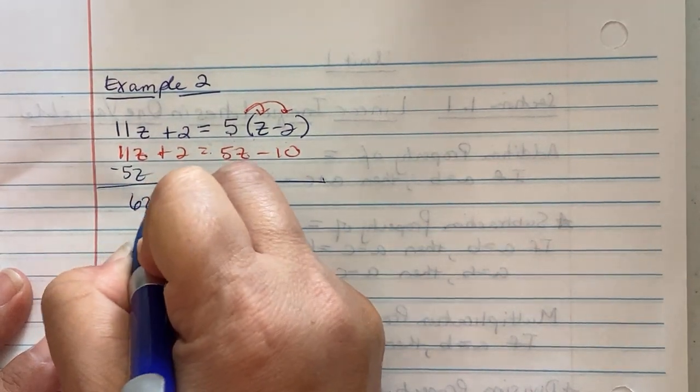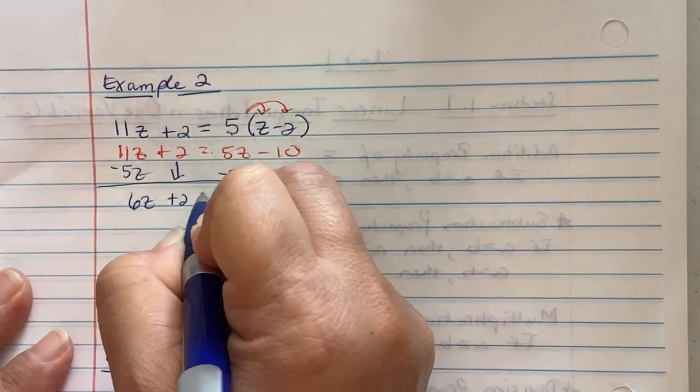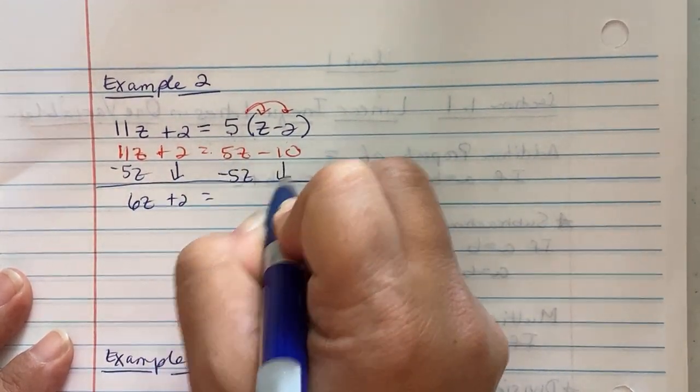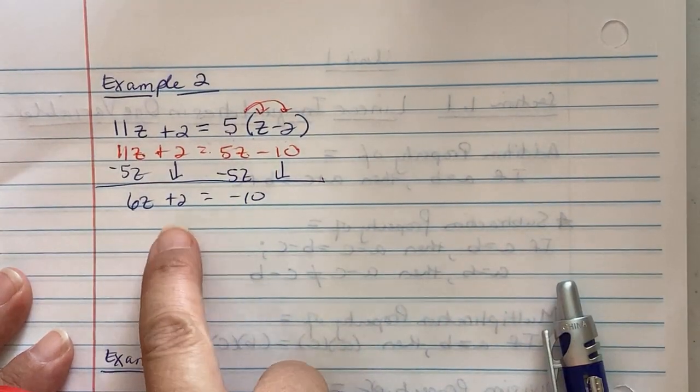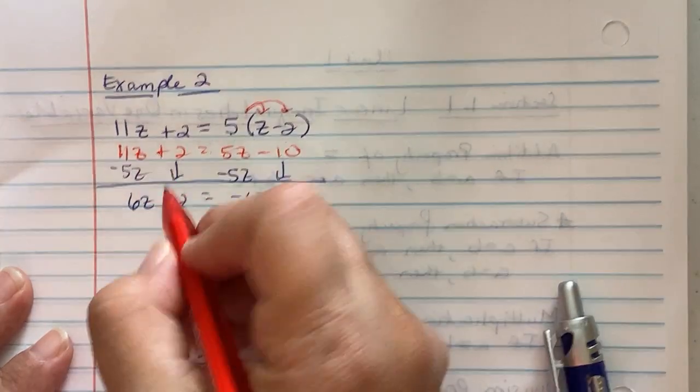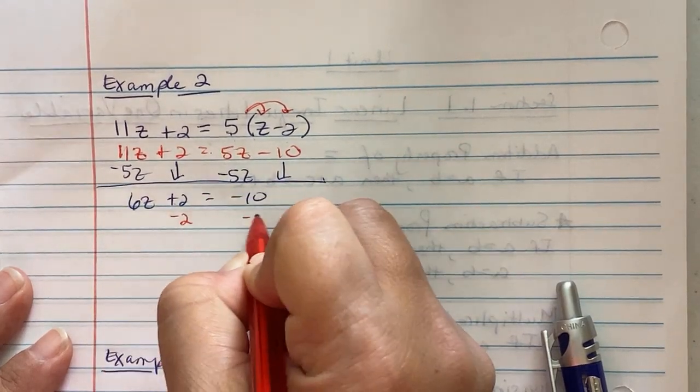So you get 6z plus 2 equaling negative 10. Now you're going to move the 2 to the right. So it's positive 2, I'm subtracting it.